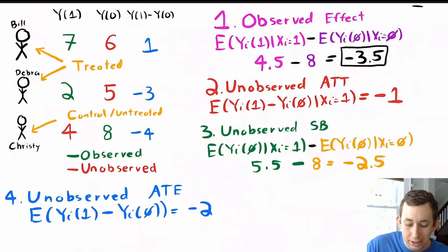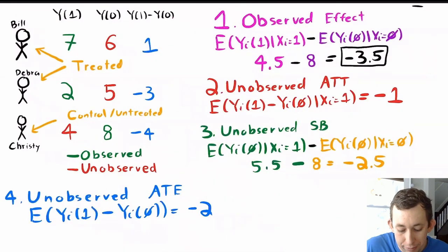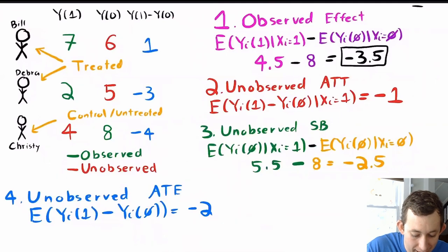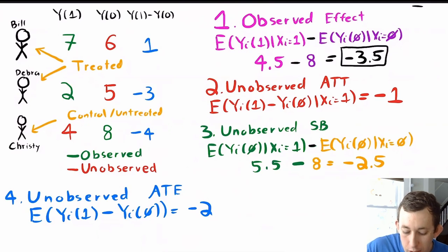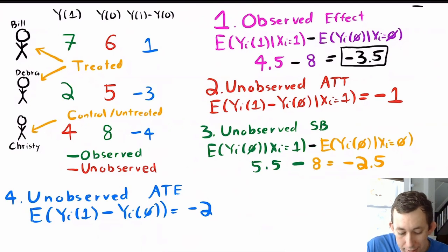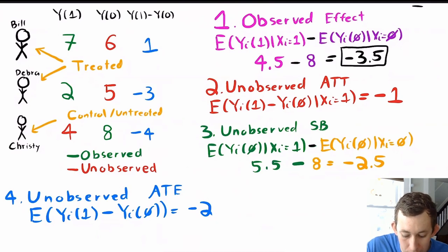Let's take that same example and do all the numbers. First we can find the observed effect: the average of the 7 and the 2 minus the 8. That's going to be 4.5 minus 8, which is minus 3.5. So what we see in the data is that it looks like having a cat reduces your stress by 3.5 points.